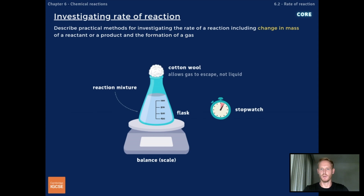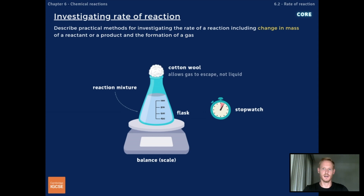To investigate the rate of reaction by measuring change in mass, add the reactants to an open flask placed on a balance, and cover the mouth of the flask with a piece of loosely packed cotton wool. The cotton wool allows gas to escape but prevents any liquids from being ejected. Because gas molecules are able to escape, as the reactant is consumed, the mass of the contents of the flask decreases. Mass is recorded at regular time intervals using a stopwatch, and the results are plotted on a graph.